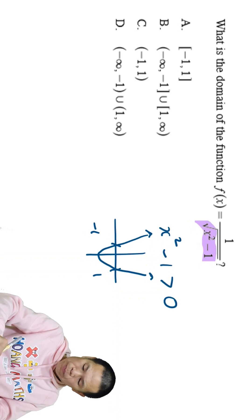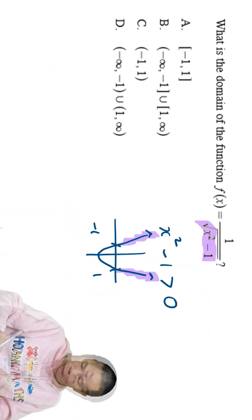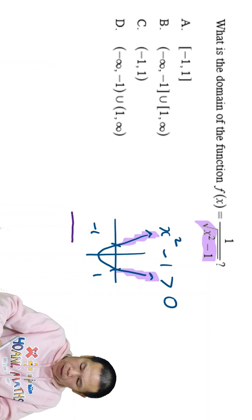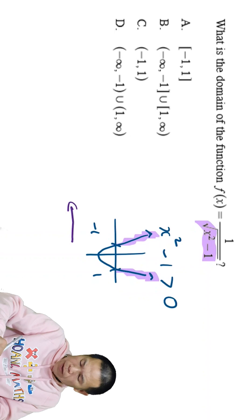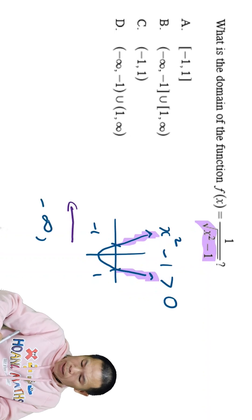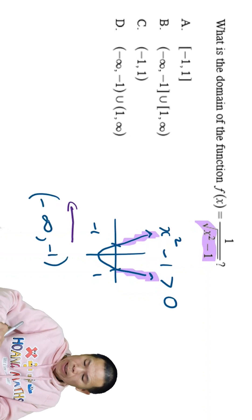So therefore, these are greater than zero. This means that the answer should be from this onward. So that is from negative infinity to negative 1, excluding.